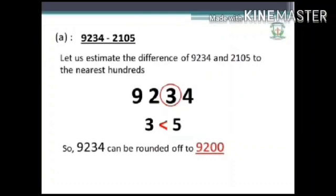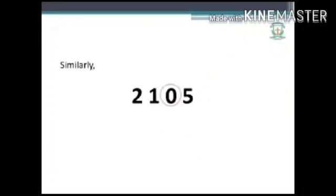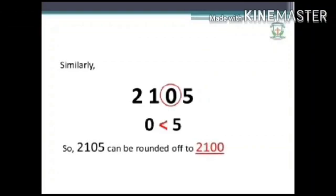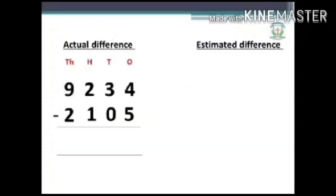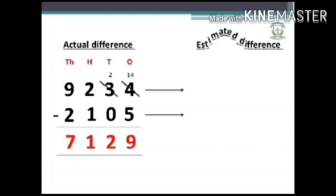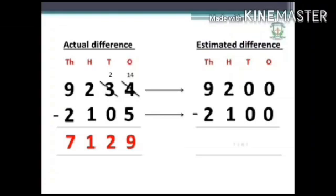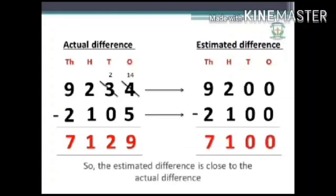Similarly, 2105 has 0 in its tens place, which is less than 5, so 2105 is rounded off to 2100. Let us find the actual difference and estimated difference by writing in the place value chart. The actual difference of 9234 minus 2105 is 7129.